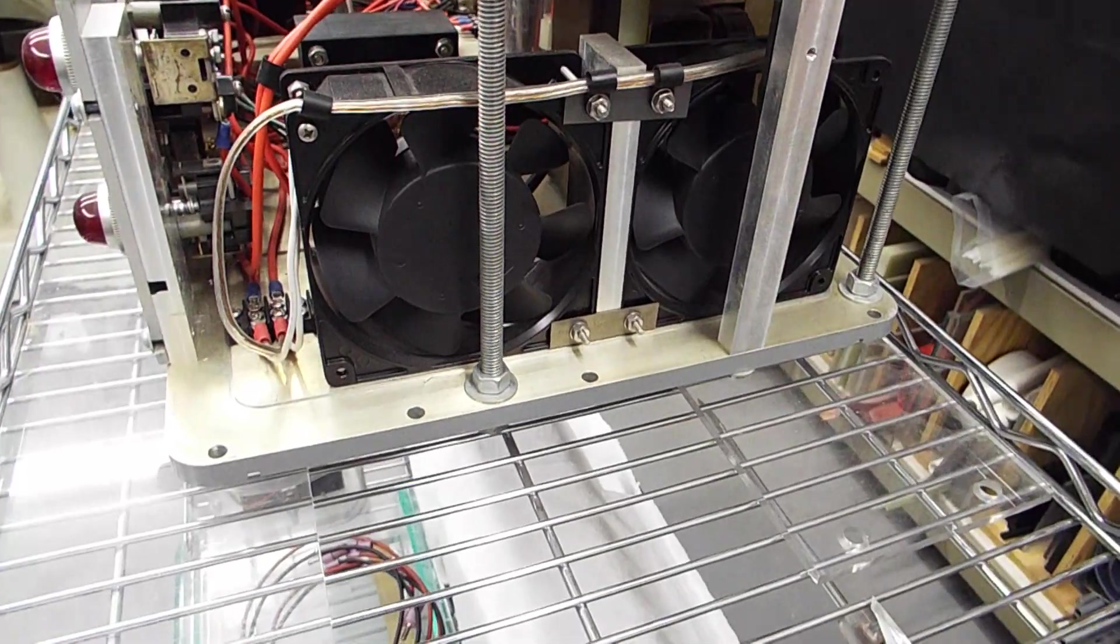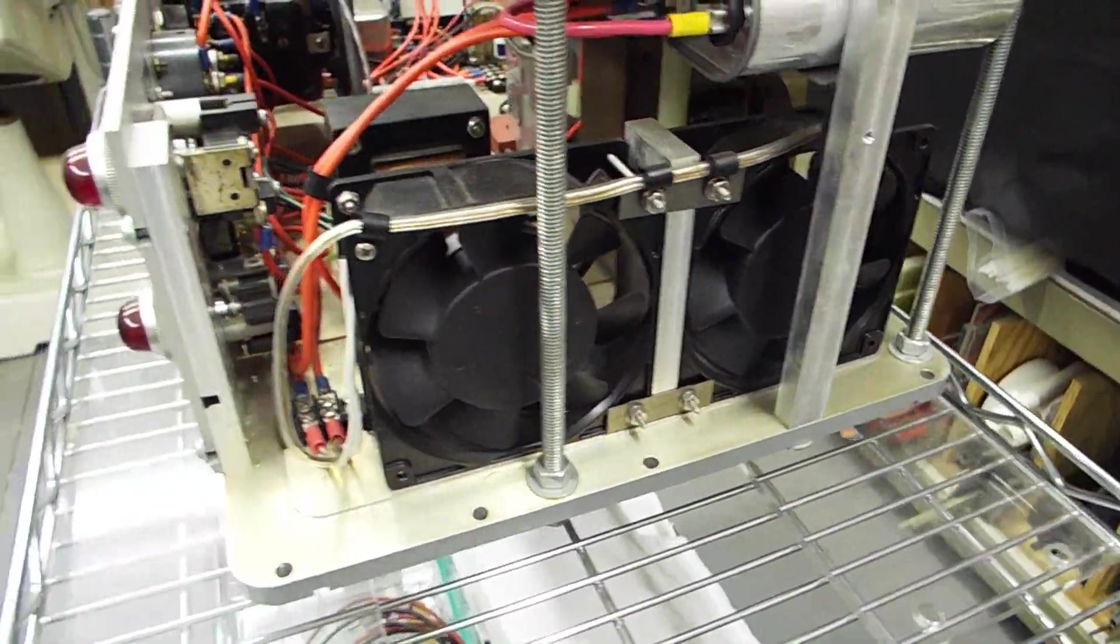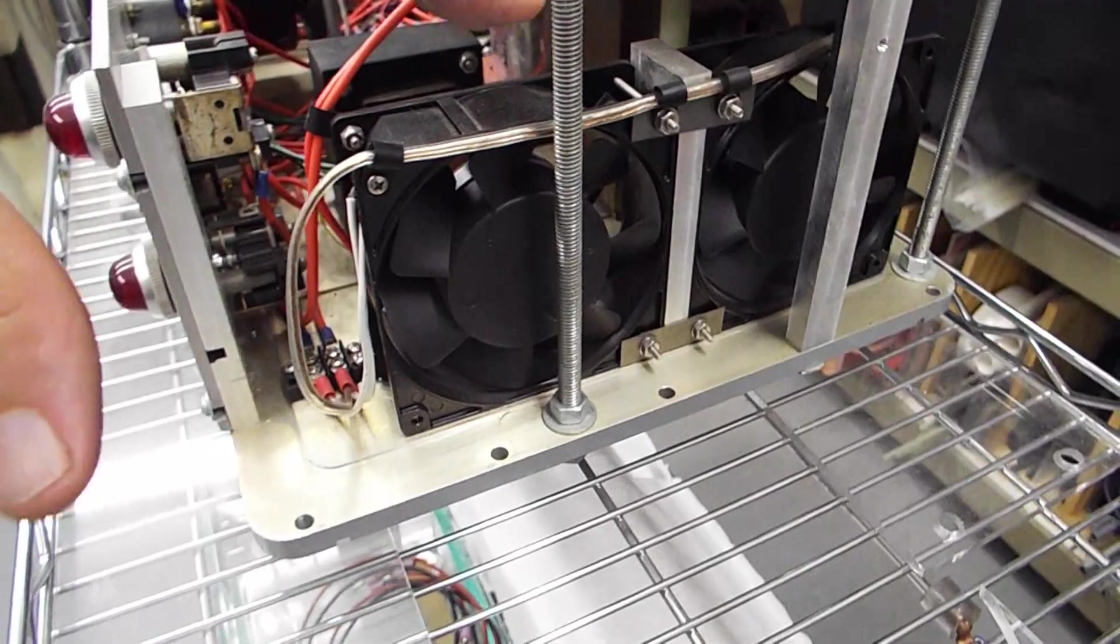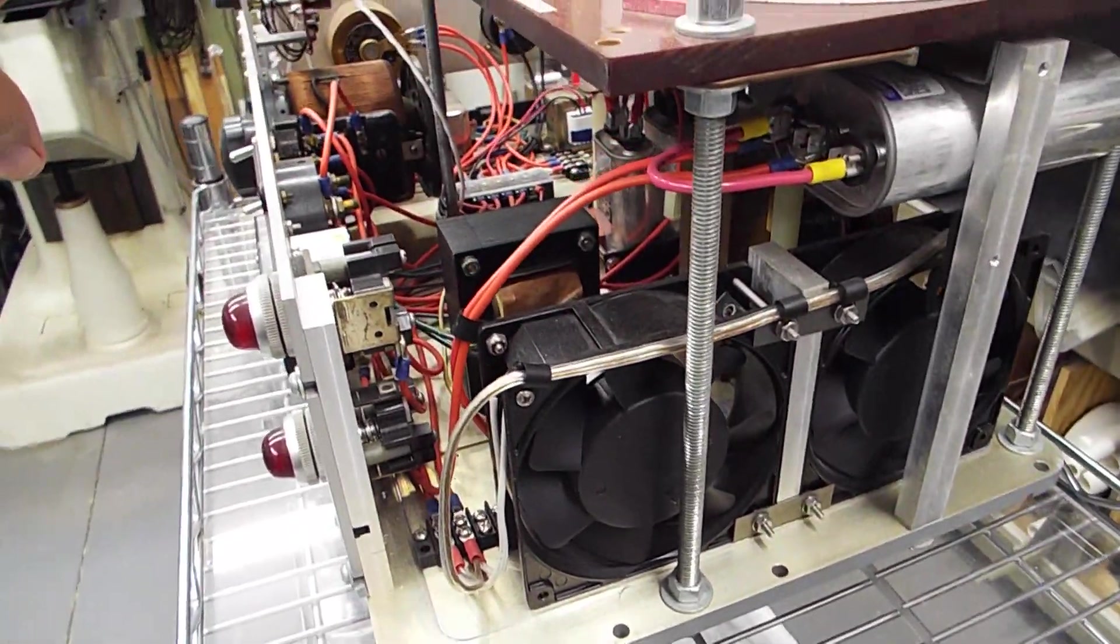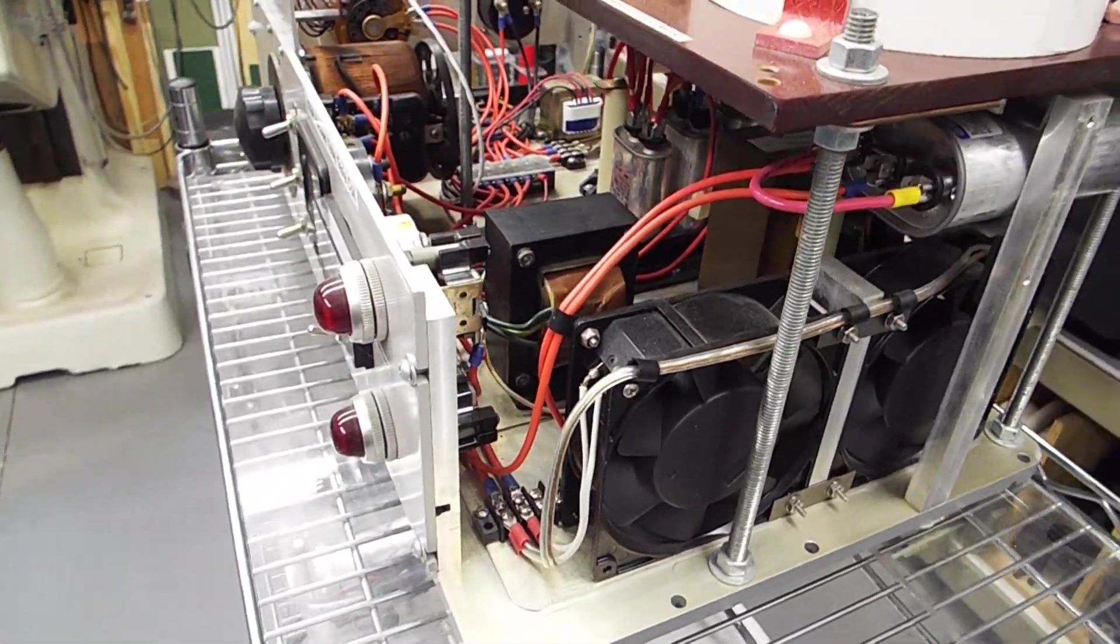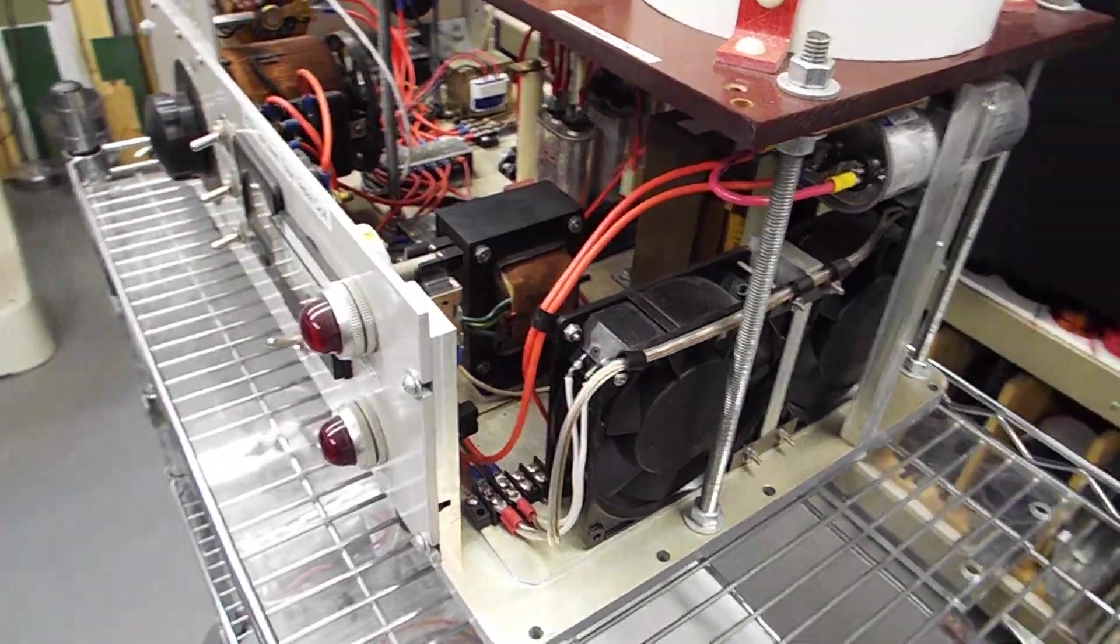One of them is blowing mainly on the microwave oven transformer. The other one is blowing back toward the variac. Because it can get pretty warm if you're really cranking the power up.